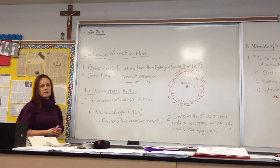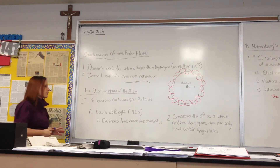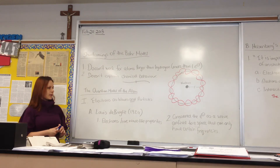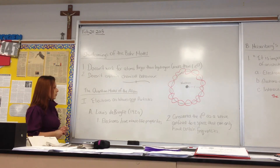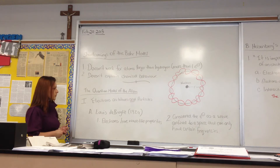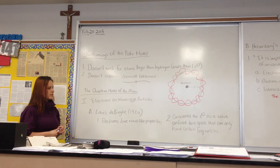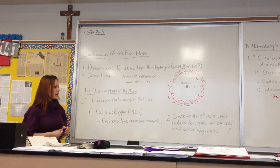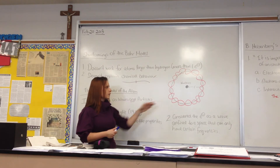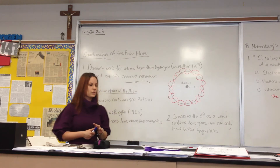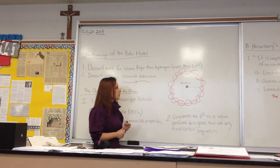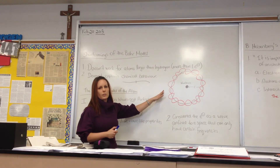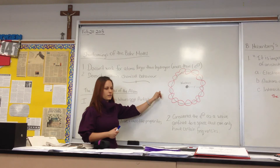The second shortcoming is that it doesn't explain chemical behavior. The quantum model of the atom does do those things. The first point is that electrons behave both as waves and as particles, and this was first founded by Louis de Broglie in 1924, where he determined that electrons have wave-like properties and considered the electron as a wave confined to space that can only have certain frequencies. His model is drawn right here, very similar to Bohr's model of the orbits around the nucleus, but it also shows the wave properties of electrons having different wavelengths and different frequencies.